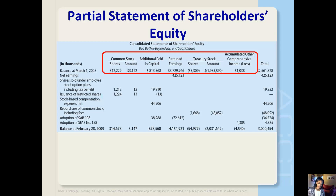The five columns of the statement of stockholders' equity refer to the five equity accounts from the balance sheet. Those are common stock, additional paid-in capital, retained earnings, treasury stock, and accumulated other comprehensive income.